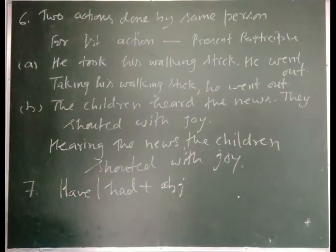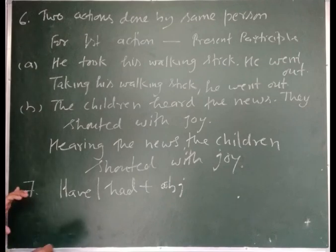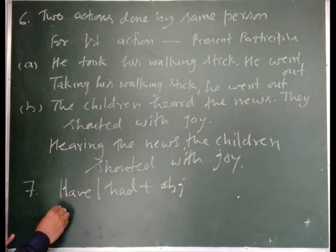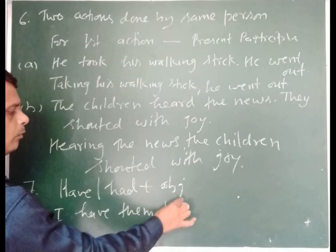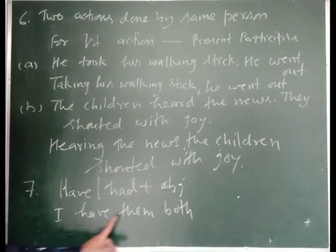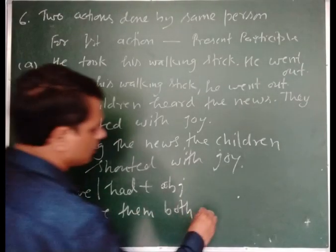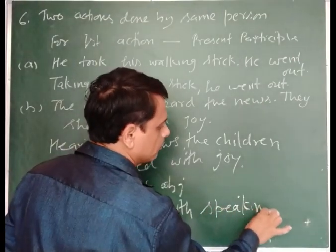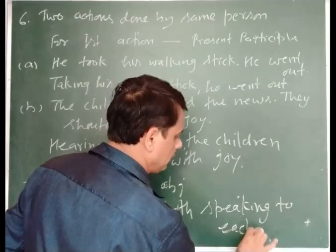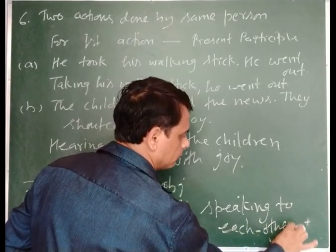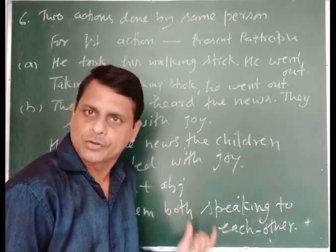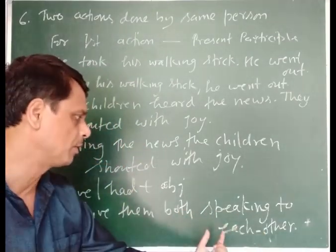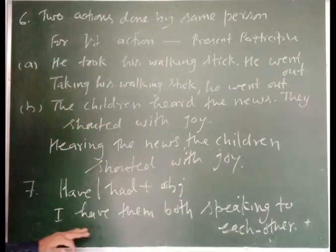Seventh use: with 'have/had + object', we use present participle. For example: I have them both speaking to each other — meaning I have persuaded them to speak to each other. So the structure is: have/had + object + present participle.